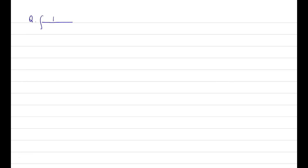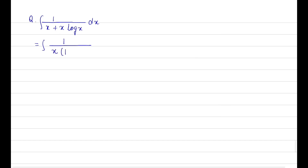Now suppose the question is: integration of x / (x + x·log x) dx. First, let us take x common in the denominator, so it becomes: integration of x / [x(1 + log x)] dx, which simplifies to integration of 1/(1 + log x) · (1/x) dx... wait, let us rearrange: integration of 1/(1 + log x) dx/x... actually it is integration of dx / (1 + log x) rearranged as (1/(1 + log x)) dx.